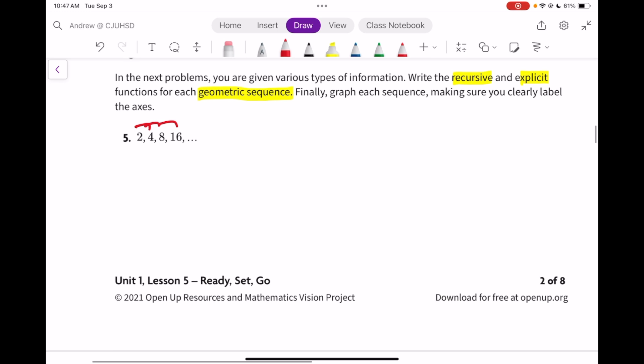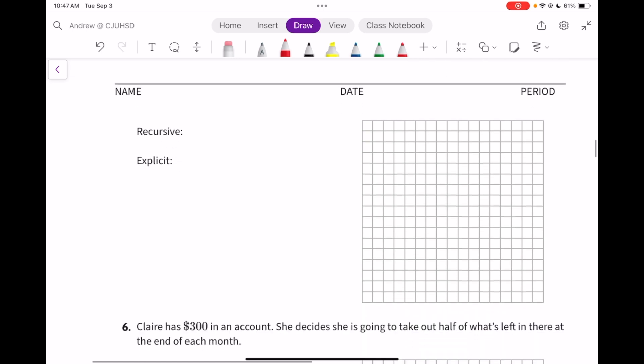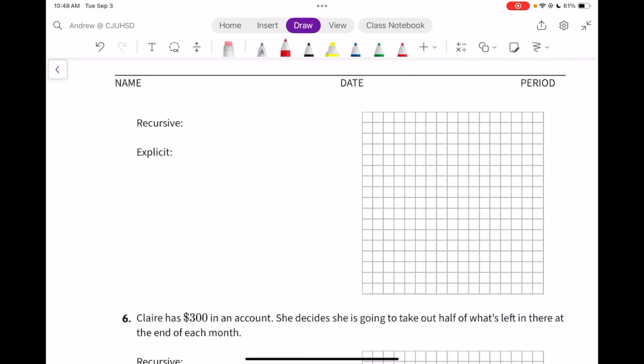So remember, any number divided by the one that came before it is going to show you the common ratio. These are just numbers divided by the ones that came before them. So the common ratio is 2. The recursive is that the next equals 2 times the previous. The explicit is the first number, 2 times the common ratio, 2 to the n minus 1.